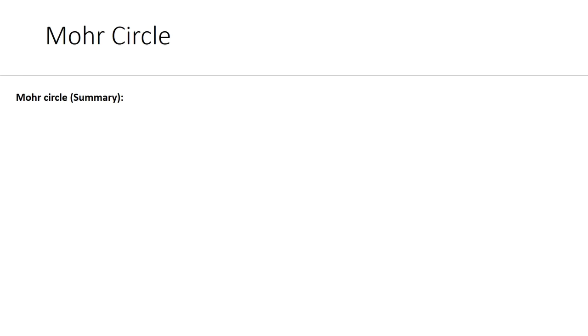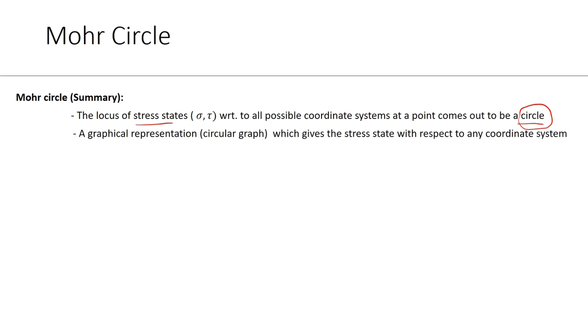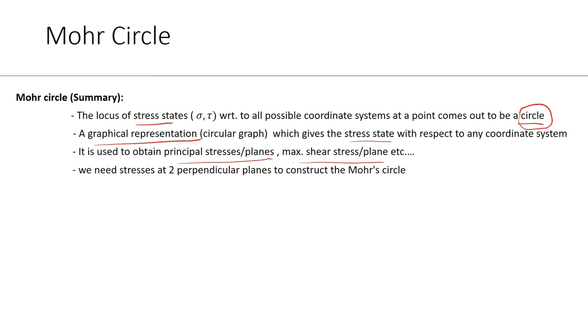I'm not going to explain Mohr circle in the same detail as stress state or principal stresses — I'll go through this quickly with fewer insights. If you plot all the stress states at a point, you will obtain a circle called the Mohr circle. Why do you obtain a circle and not an ellipse or something else? Think about it. We can understand this as a simple graphical representation from which we can obtain stress states. It is generally used for calculating principal stresses and corresponding planes, maximum shear stress and the corresponding plane. To construct a Mohr circle, you need stress values at two perpendicular planes.